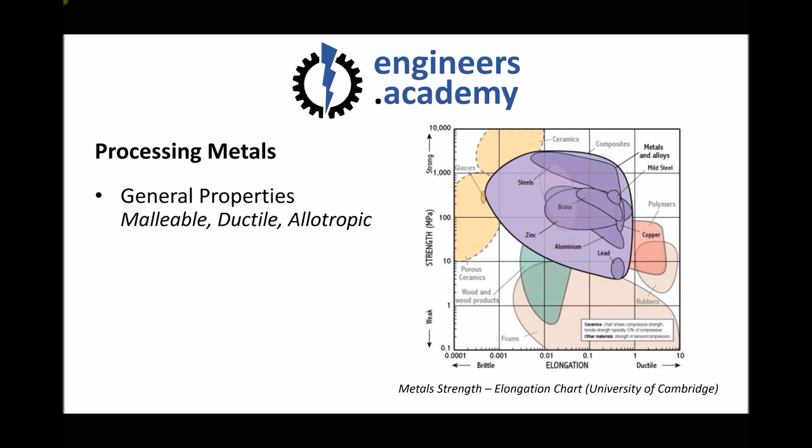So given that metals tend to be malleable and ductile, we can look at a number of different processes for shaping metals. And these processes fall into the category known as forming. We have three types of forming process that we're going to look at — there are others but we're going to focus on these three: forging, extrusion and drawing.